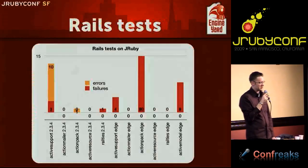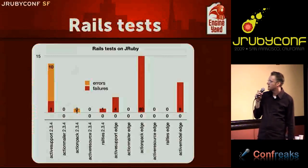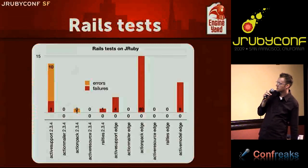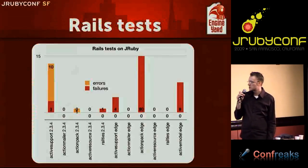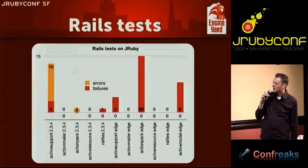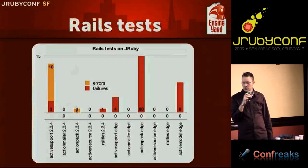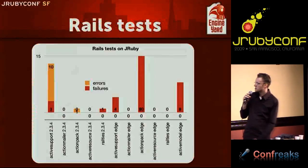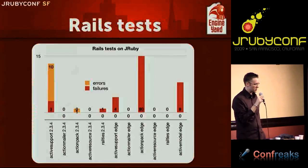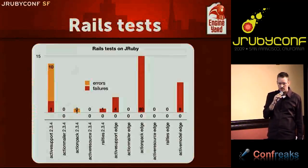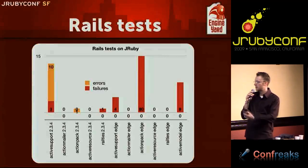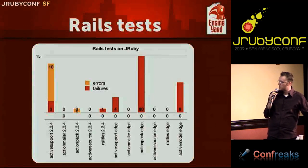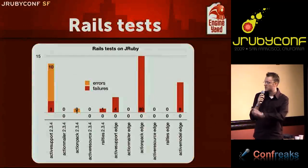Another way to look at how JRuby is doing with Rails is to look at the Rails test suite itself. This is a graph of JRuby running all the Rails tests — except ActiveRecord, which I'll show in a minute. I have test results for 2.3.4 and Edge. We still have a few errors, but there are some zeros in there too. We are running a couple of test suites cleanly, with some issues in active_support and action_pack. The larger number of errors in action_pack Edge is related to an HTML escaping bug that should come down significantly within a few days of investigation.